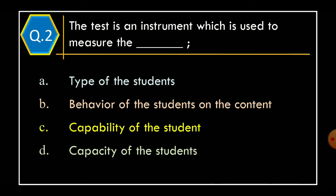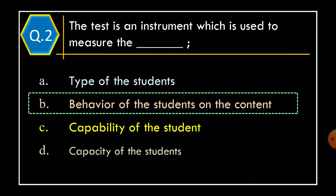Question 2: The test is an instrument which is used to measure the _____. Option A: Type of the students. Option B: Behavior of the students on the content. Option C: Capability of the students. Option D: Capacity of the students. The correct option is Option B, Behavior of the student on the content.